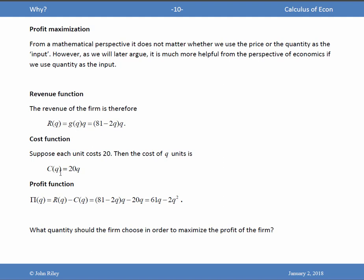The profit function, that's the thing we're interested in because we want to maximize it, is revenue minus cost. So here's the revenue term from here. Here's the cost term. Subtracting one from the other, it's 61Q minus Q squared. So the question is what quantity should the firm choose in order to maximize the profit of the firm? And you know from your calculus class how to do this.